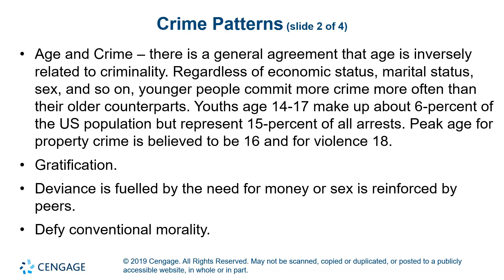Age and crime: there is a general agreement that age is inversely related to criminality. Regardless of economic status, marital status, or sex, younger people commit more crime than their older counterparts. Youths age 14 to 17 make up about 6% of the U.S. population but represent about 15% of all arrests. Peak age for property crime is believed to be about 16, and for violent crime about 18. Rationales include gratification, deviance fueled by the need for money or sex, or behaviors reinforced by peers.